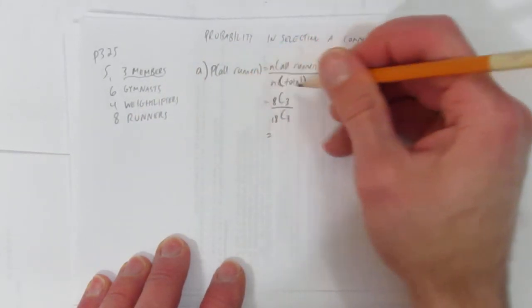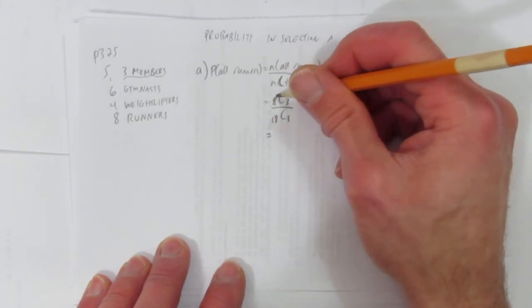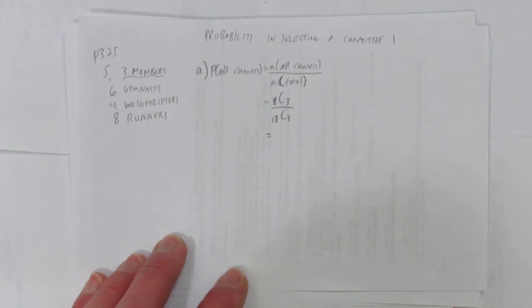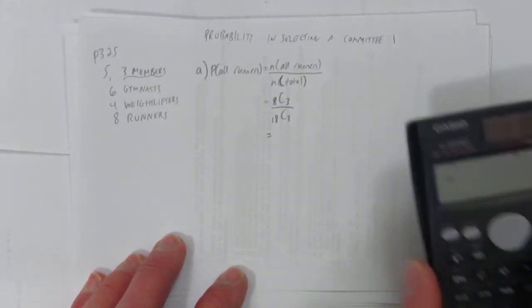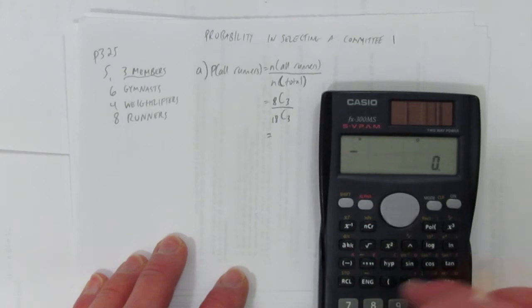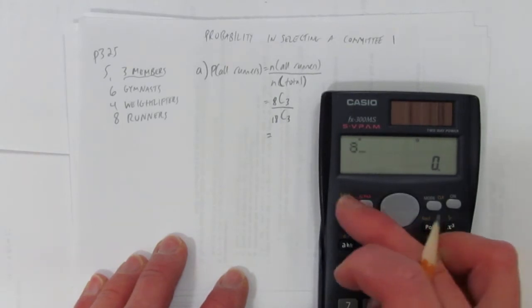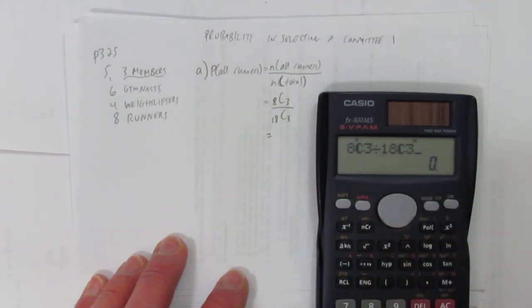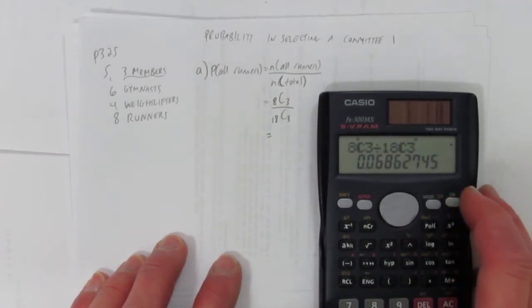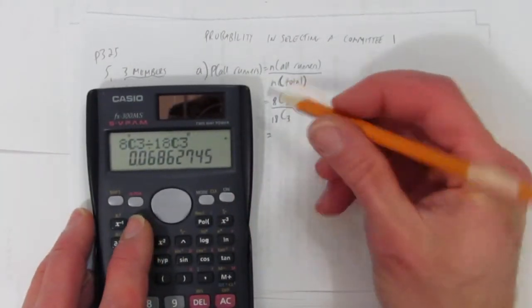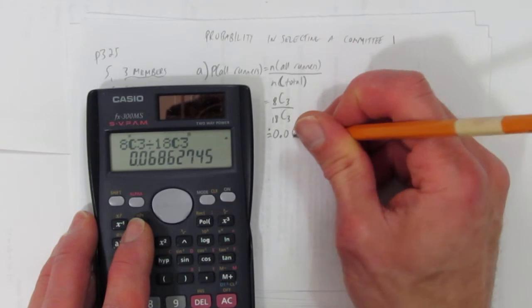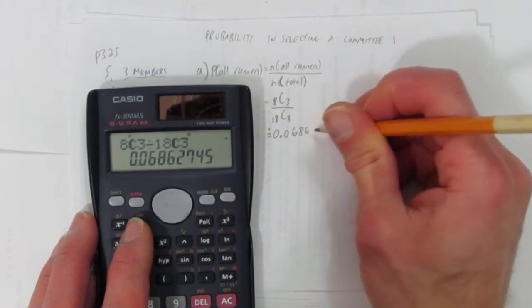So the probability of all runners is just the number of ways to choose the runners, eight choose three, over the number of ways to choose anybody, eighteen choose three. Let's calculate that. On your calculator, make sure you know how to use the choose button, eight choose three, divided by eighteen choose three. And we get, let's round to five decimals, 0.06863.